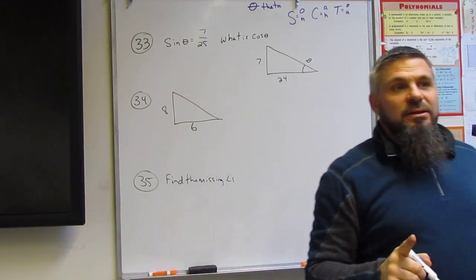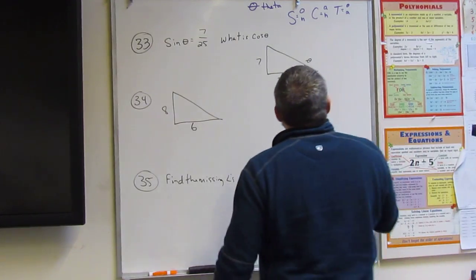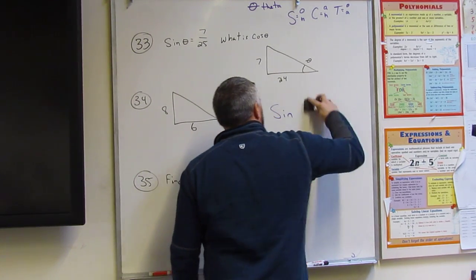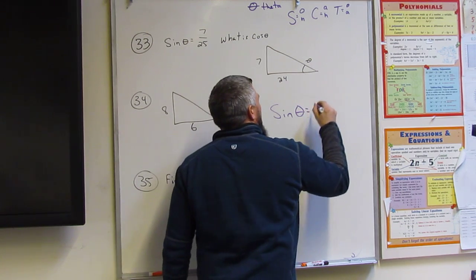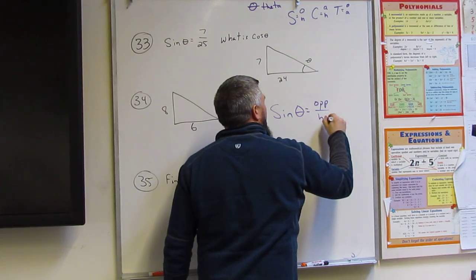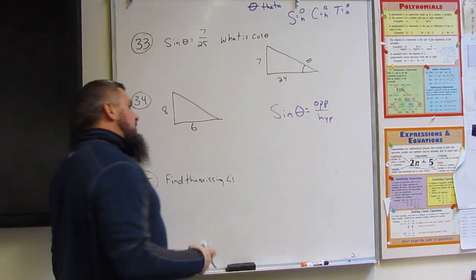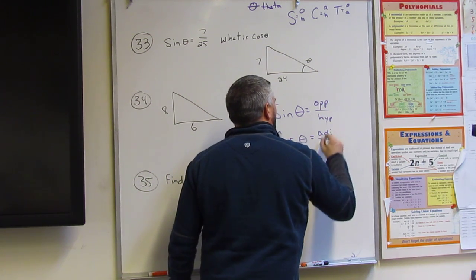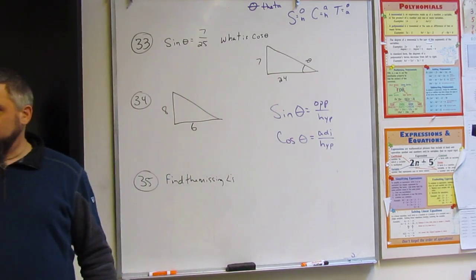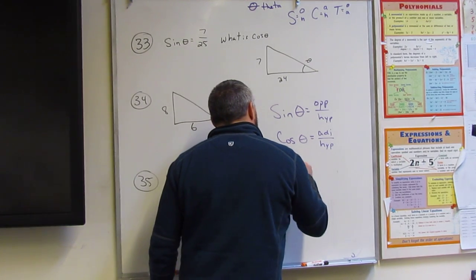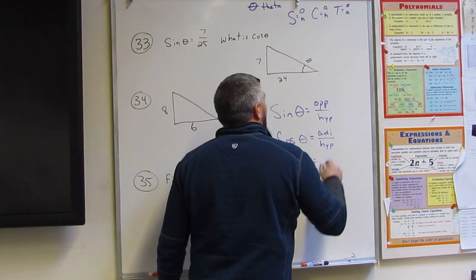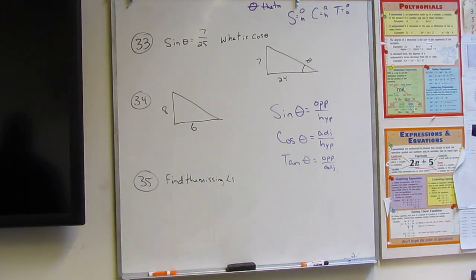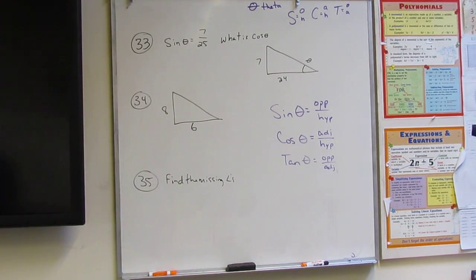The reason why I write it that way is because the sine of theta is equal to the opposite over the hypotenuse. The cosine of theta is equal to the adjacent over the hypotenuse. And the tangent of theta is equal to the opposite over the adjacent.